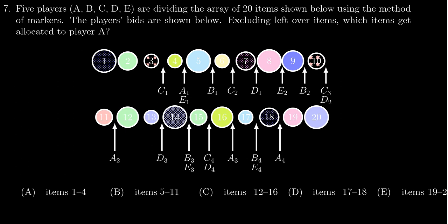We have 5 players—A, B, C, D, and E—who are dividing up 20 items using the method of markers. Their bids are placed here: a line 1 through 10 and wrapping around 11 through 20. We have to figure out which items are allocated to player A.